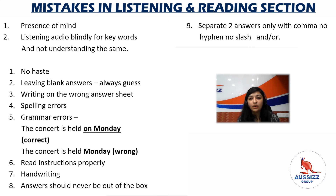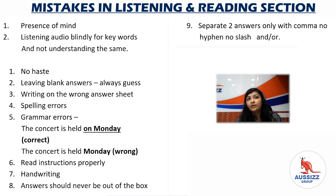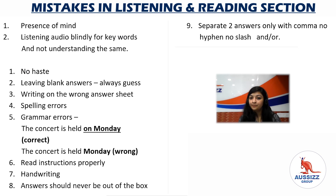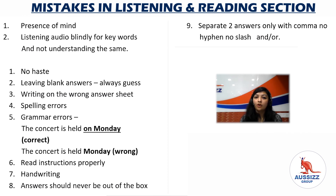The last tip: when two answers are required, separate them only with a comma — no hyphen, no slash, no writing 'and' or 'or'. For example, if you are asked to select two options for question 11, you write 'A, B' — not 'A/B', not 'A-B', not 'A and B', not 'A or B'. Only a comma. Writing anything other than a comma to separate answers will make your answer wrong.